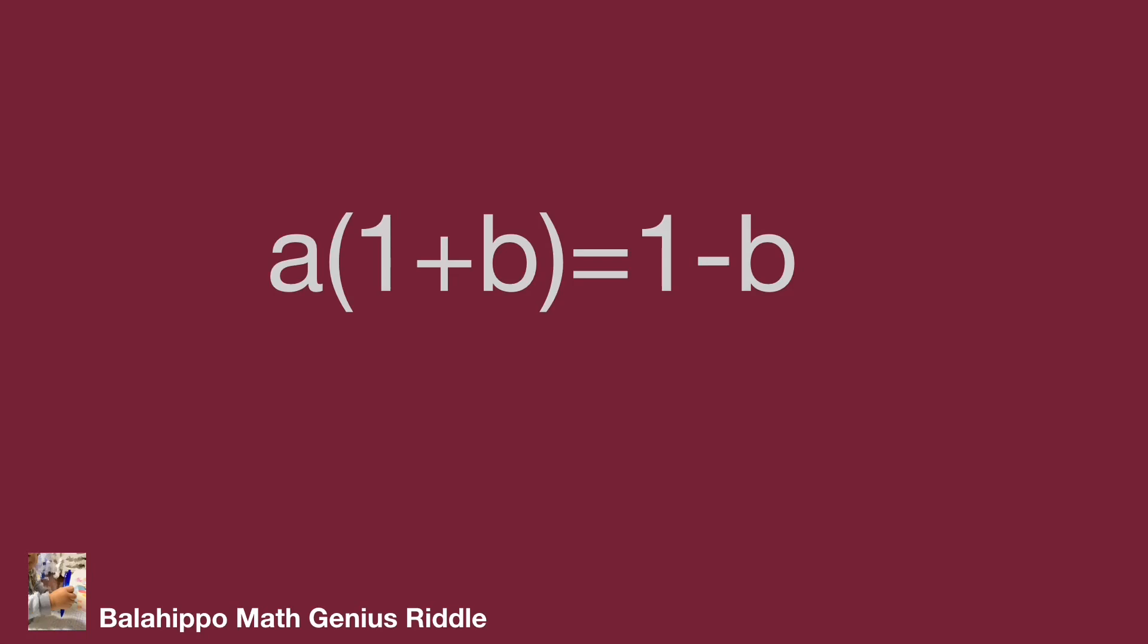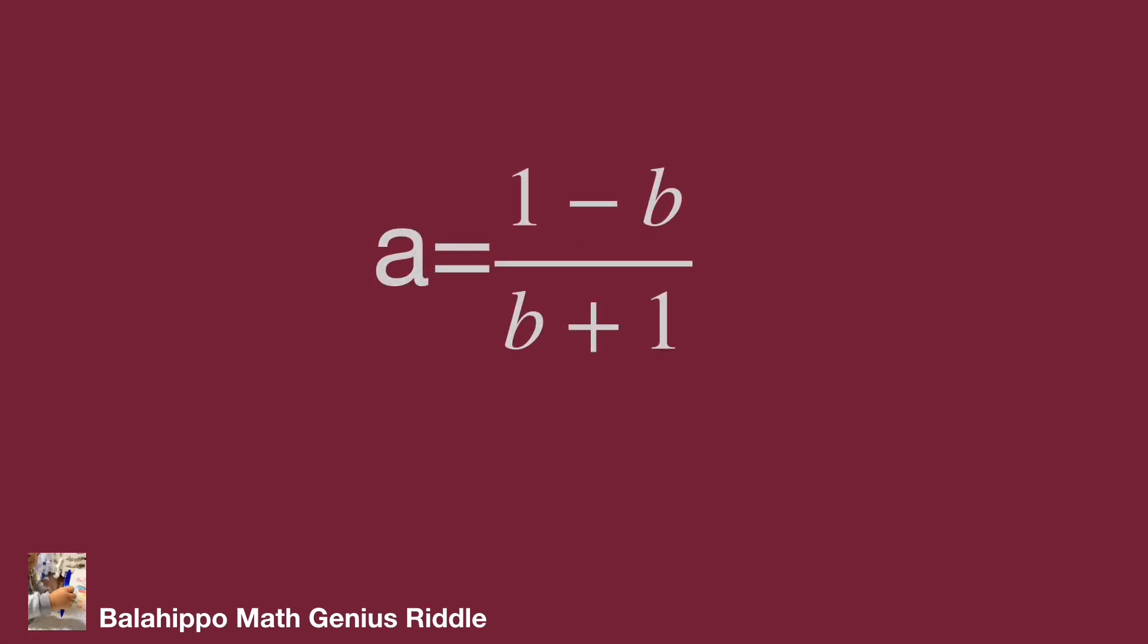Then divide 1 plus b to both sides of the equation. Get a equals (1 minus b) over (b plus 1). A is an integer, so (1 minus b) over (b plus 1) is an integer too.